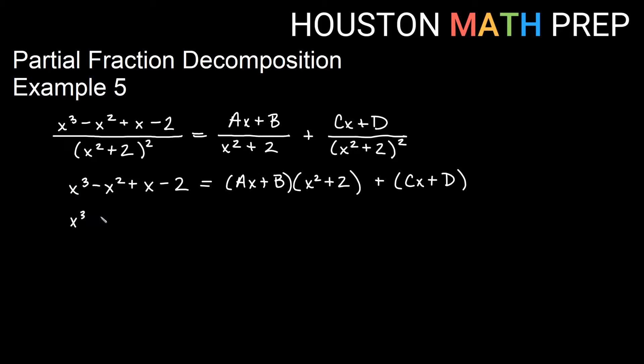So on the left side, we have x cubed minus x squared plus x minus two. If I distribute over here, I'll have ax times x squared. So that's ax cubed. Distributing ax there would give me plus two ax. Distributing b here will give me plus bx squared. And distributing b to the next one will give me two b. We just have plus cx plus d because there's nothing to distribute there.